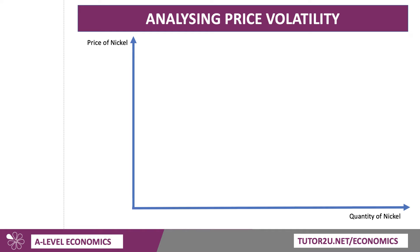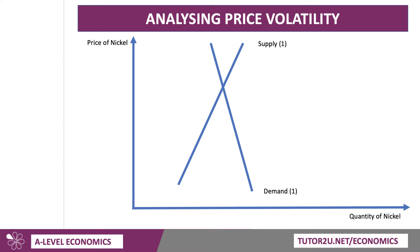So what about the diagram for price volatility? Let's work through it using nickel as an example. There's a low price elasticity of demand because of its role as an essential input, and a low price elasticity of supply in the short term — it's often hard to increase extra supply if demand goes up. At the equilibrium, quantity Q1 and price P1, there is a balance between supply and demand.